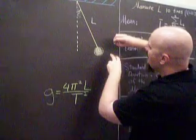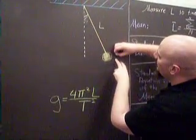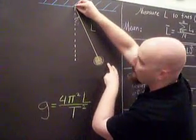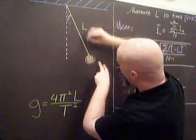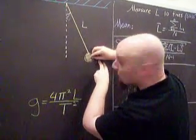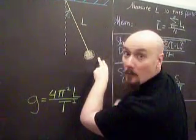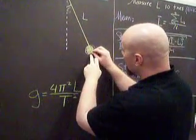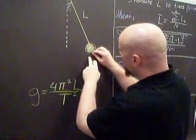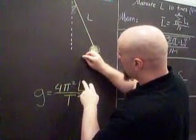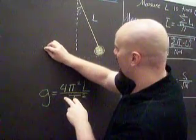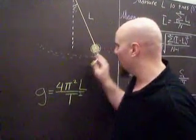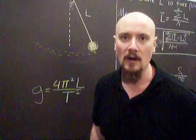So L is going to be the length of the pendulum — from the top here where it's attached to the ceiling, all the way to the center of the ball. That's L. And then the period is: if I release this and it goes one way and then back, the time it takes to go forward and back is one period.